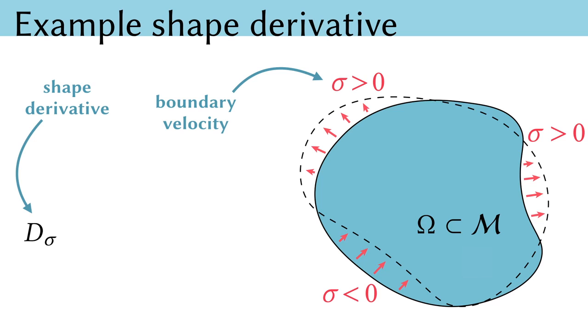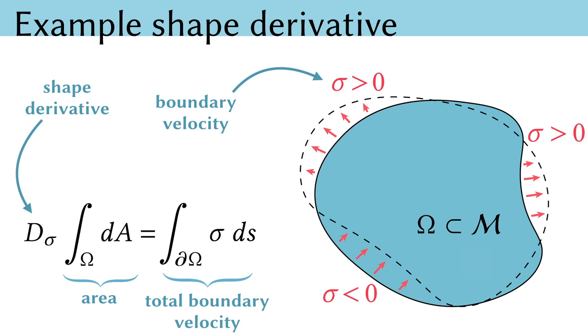For any quantity of interest, we can consider the shape derivative of that quantity with respect to the perturbation sigma. How does that quantity change as the shape deforms? For instance, let's consider the quantity area. The shape derivative of area is given by the integral of sigma around the boundary. Where sigma is positive, the area is increasing. Where it's negative, the area is decreasing. And then the total change of area is given by the cumulative effect of these changes.